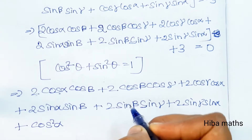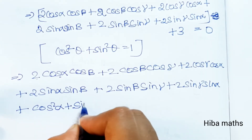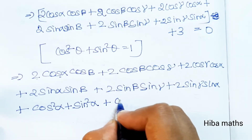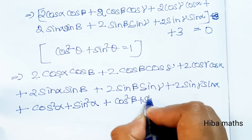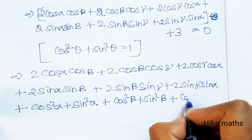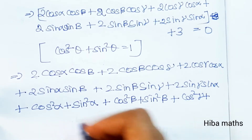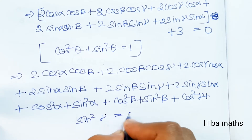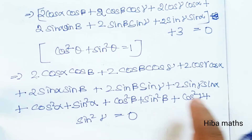Now we add the identity terms: cos² α + sin² α = 1, plus cos² β + sin² β = 1, plus cos² γ + sin² γ = 1, which equals 0 on the other side. So we add these 3 terms.